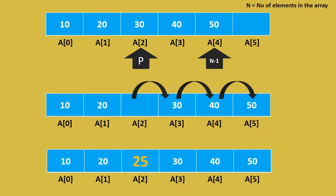The first and foremost thing is we need to have appropriate locations or positions. We need to have the extra space to insert or accommodate a new element. Only if we have the location, if we have the place to accommodate another element, then the inserting operation will be successful.